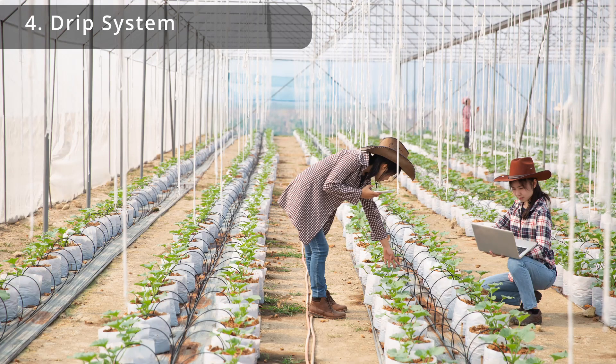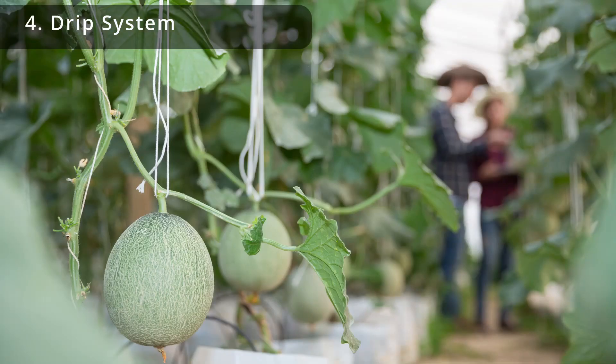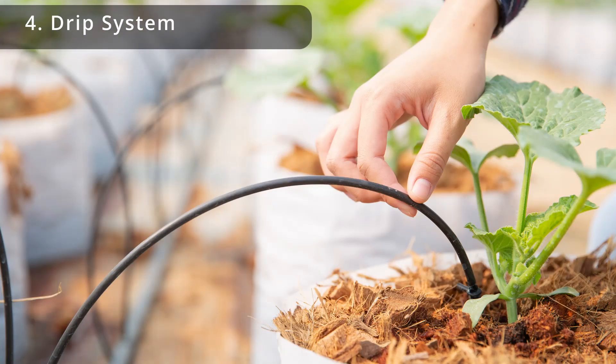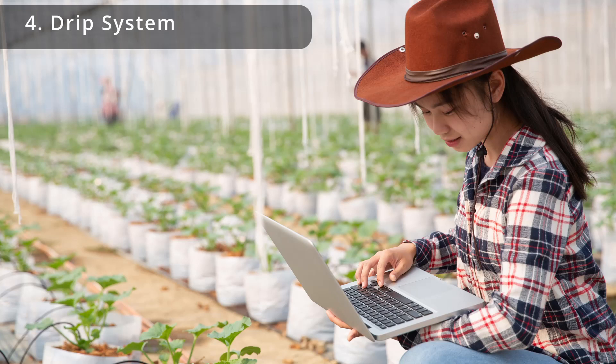The drip system is a type of hydroponic system that uses a nutrient-rich water solution delivered to the plants through a series of tubes and emitters. The water is delivered in a controlled manner, ensuring that plants receive the necessary nutrients and hydration. The advantage of a drip system is that it is relatively simple to set up and maintain, and it is also very efficient in terms of water usage. However, the system can be prone to problems if the emitters become clogged or if the water pressure is not consistent, which can lead to uneven watering of the plants.